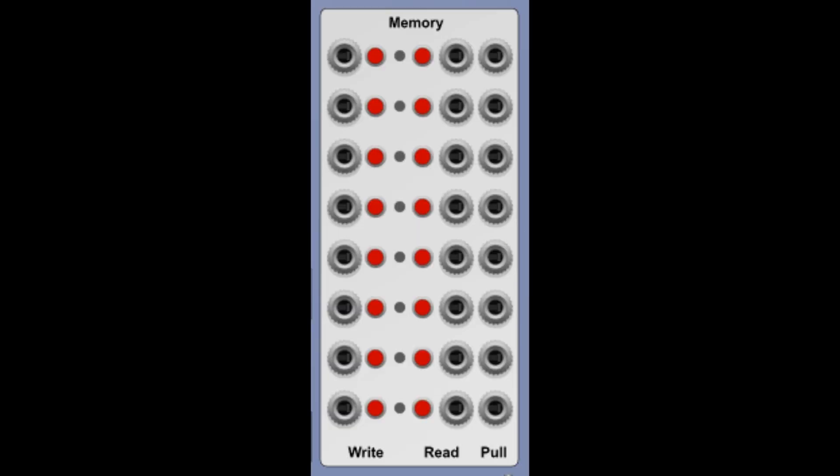The memory section consists of eight memory banks, which can store the 16 voltages of the first row. They can be written and read back into the first row. And with the pull jacks, we can read just the active value of the stored sequence back into the first row. I will show later how that works, because that might be a bit confusing.